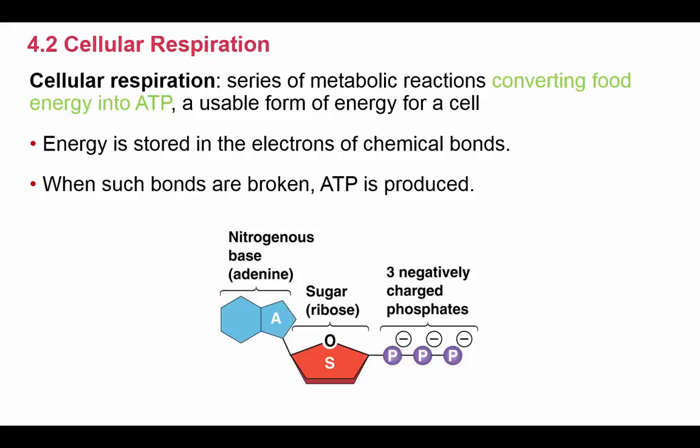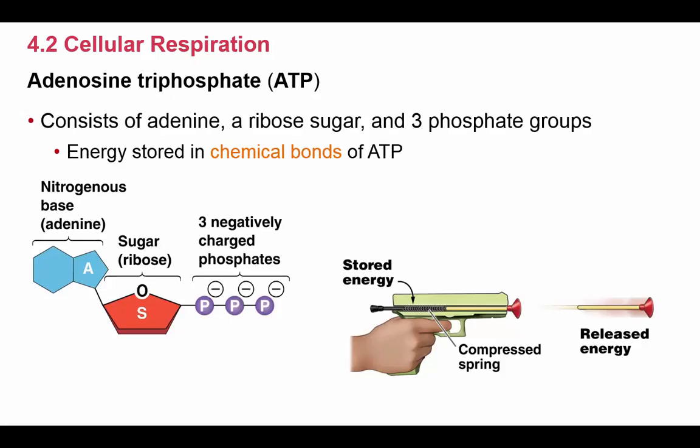A couple things to note about ATP: energy is stored in the electrons of chemical bonds that hold ATP together, and when these chemical bonds are broken, energy is produced. ATP stands for adenosine triphosphate — it's made of a base known as adenine, the sugar ribose, and three phosphate groups bound together by chemical bonds, with energy stored between them.